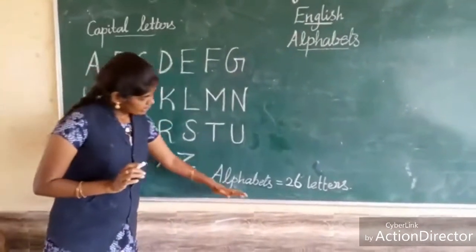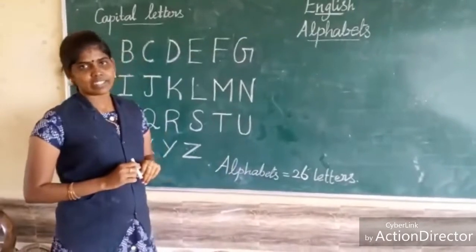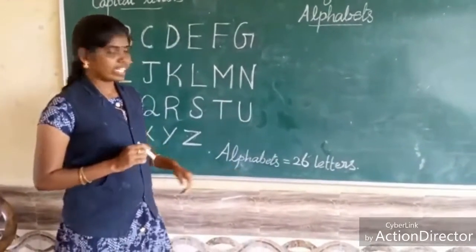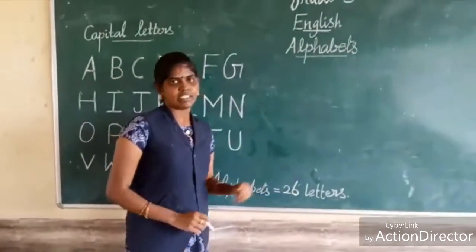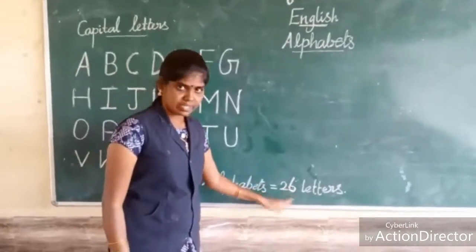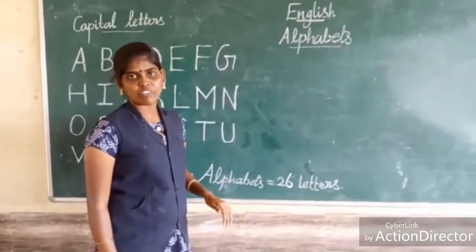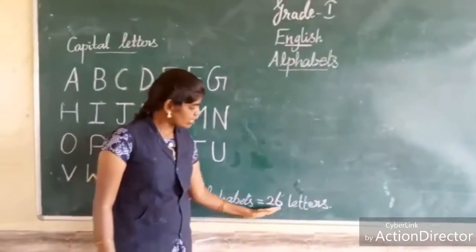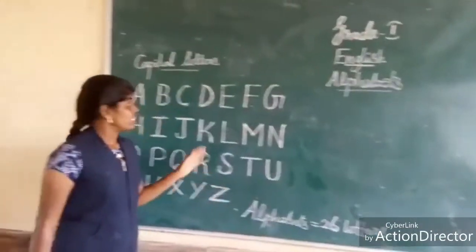How many letters are in the alphabet? There are 26 letters. There are 26 letters. First, we are going to see capital letters.